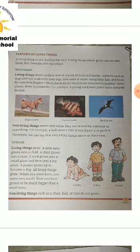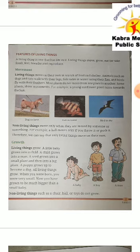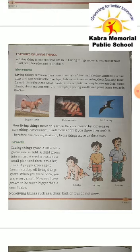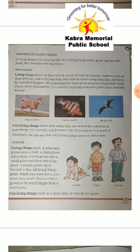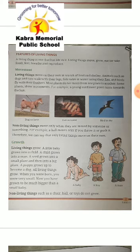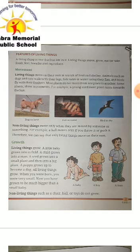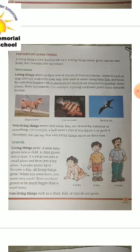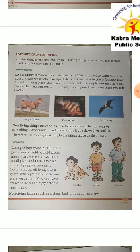When you were born you were very small, but now you have grown to be much bigger. You can look at your own baby photos to see how you've grown. Toys like a teddy bear do not grow — however big you buy them, they stay the same size. A bulb also stays the same size, because non-living things do not grow.